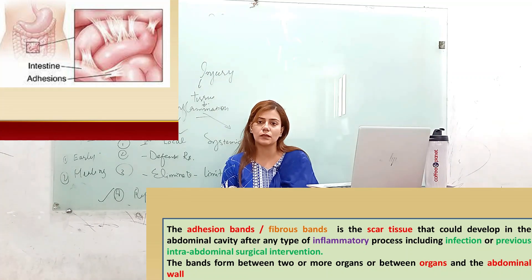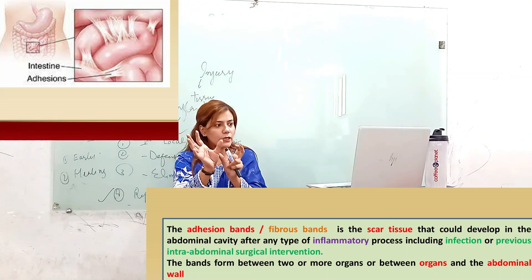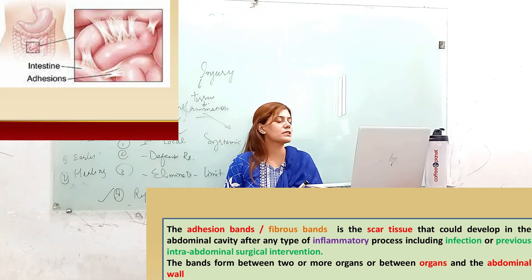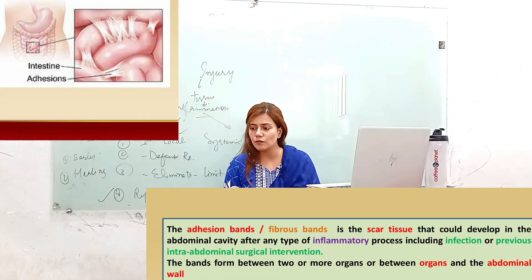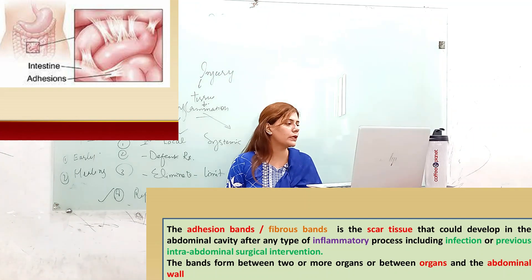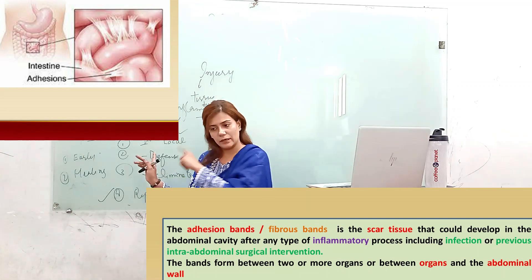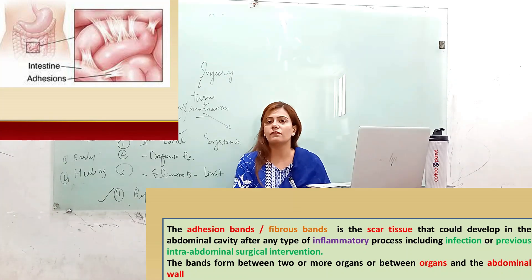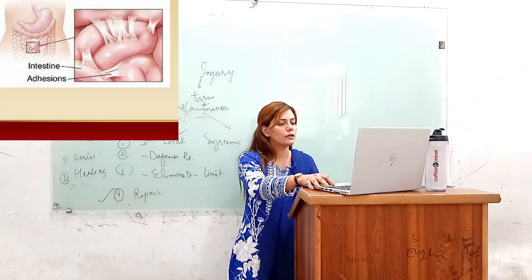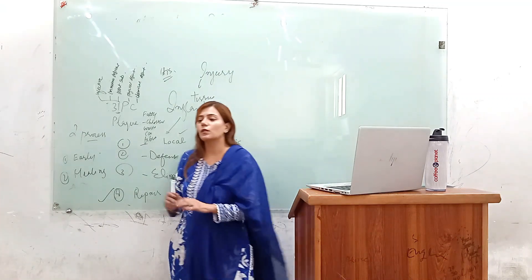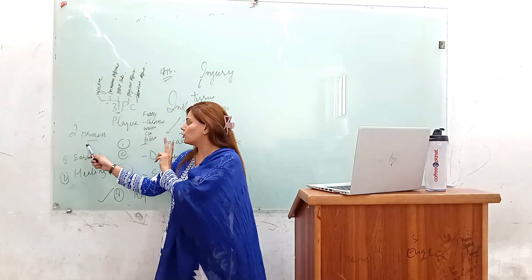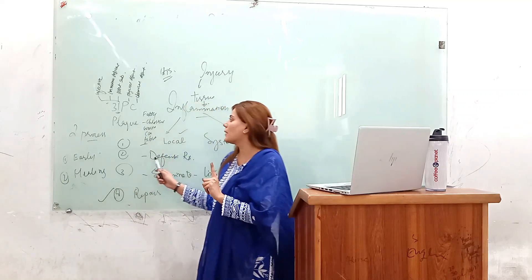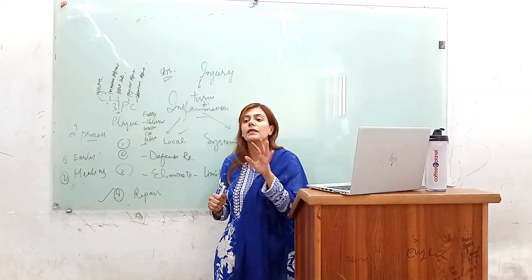In the abdominal area, these adhesions can form between organs or between the abdominal walls. You can see the fibrous band — this happens not from surgery itself, but as the body's repair response. This also occurs due to infection. In conclusion, inflammation is a protective process, and we have discussed the difference between inflammation and infection.